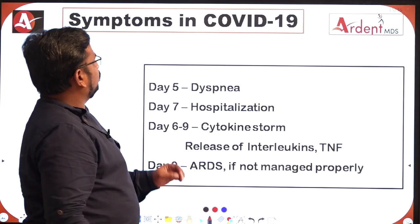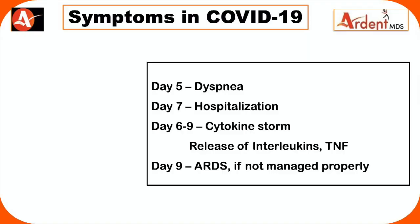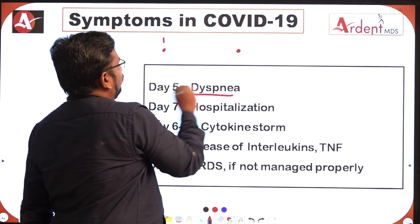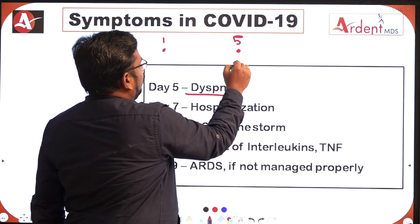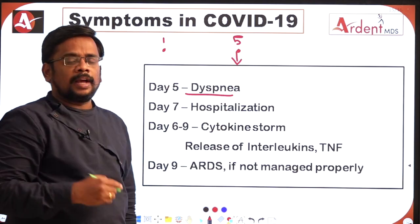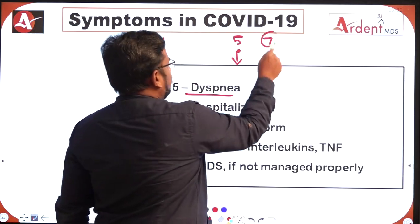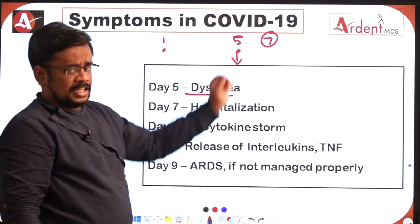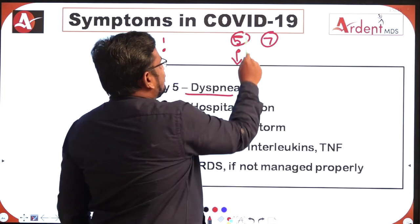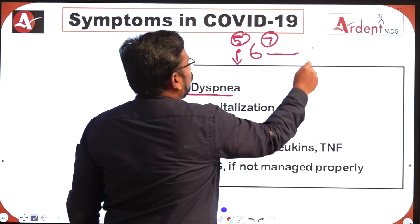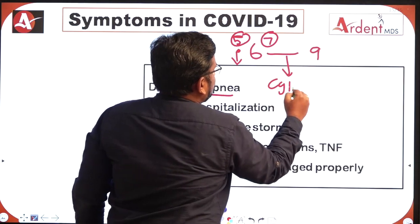Looking at symptoms across various days: initially the patient has fever, diarrhea, and anosmia. Major symptoms appear at day 5 — the patient starts having breathing difficulty. If admitted for hospitalization due to dyspnea, this occurs on day 7.